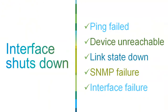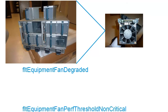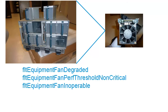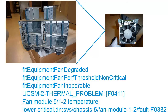For example, if you shut down an interface, you may get Layer 3 routing protocol events along with the link state events. Those all should be correlated into one ticket based on the component that failed. Another example: if the fan becomes degraded or inoperable, you may also get environmental alarms such as temperature, and they should be correlated into the same ticket.